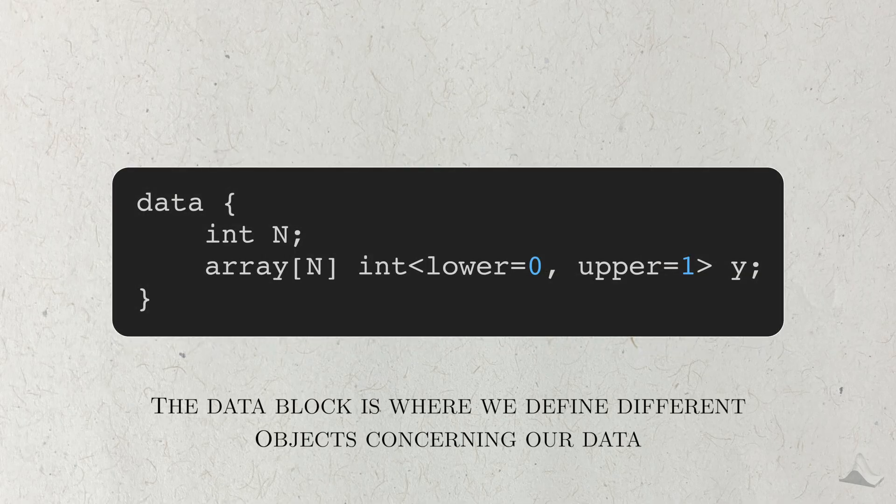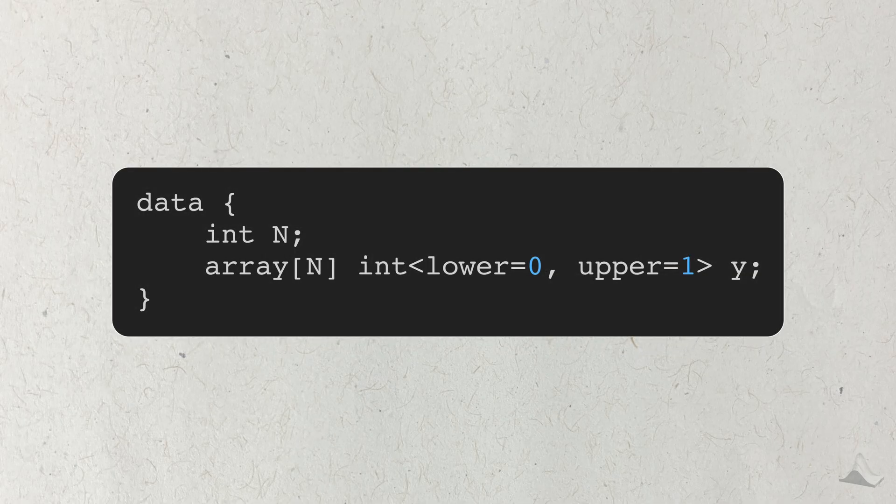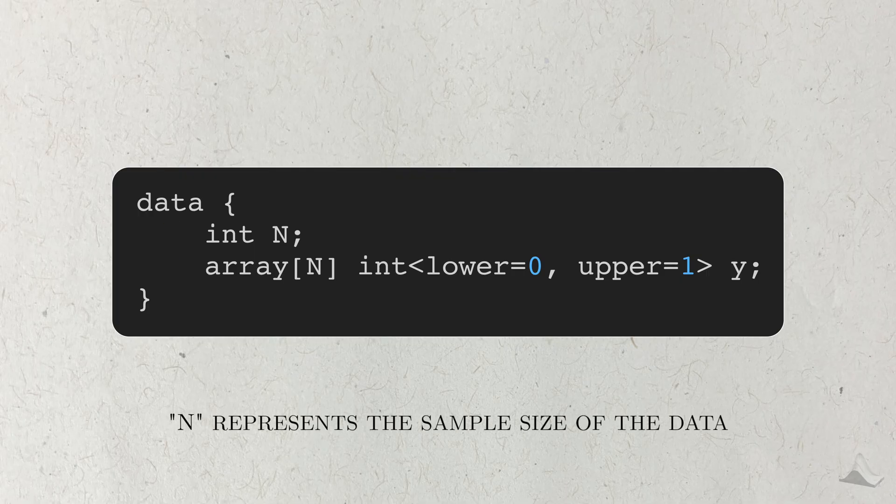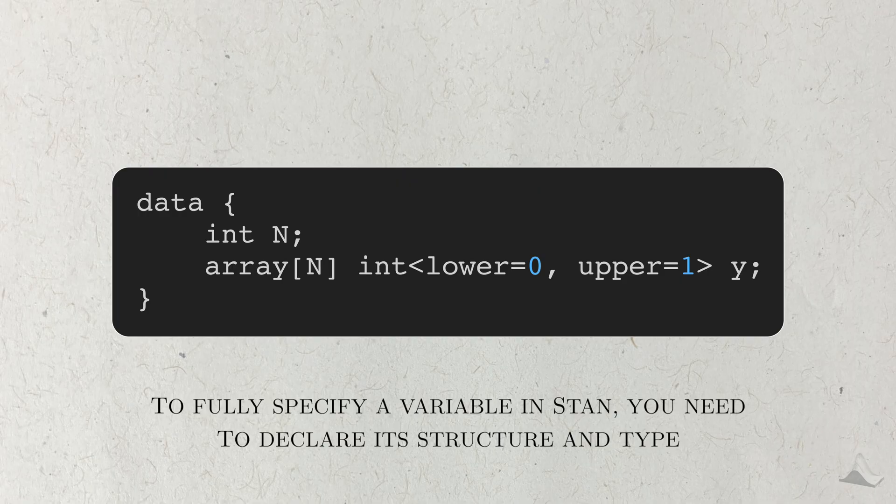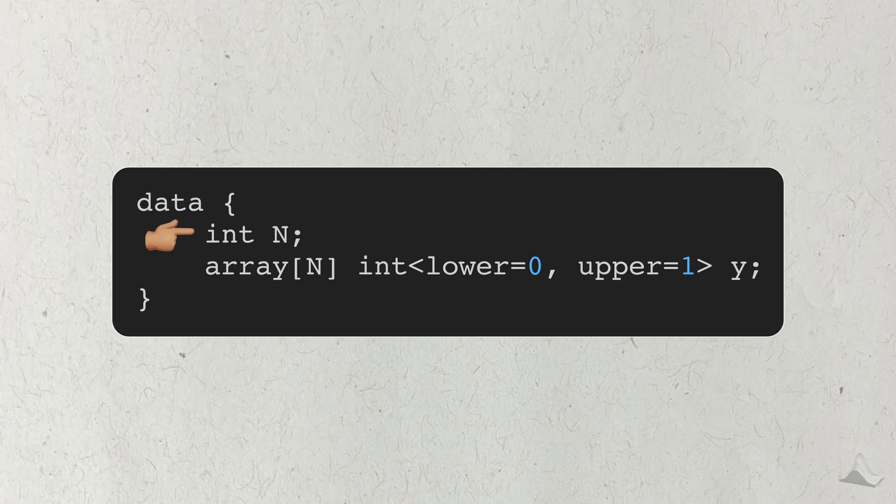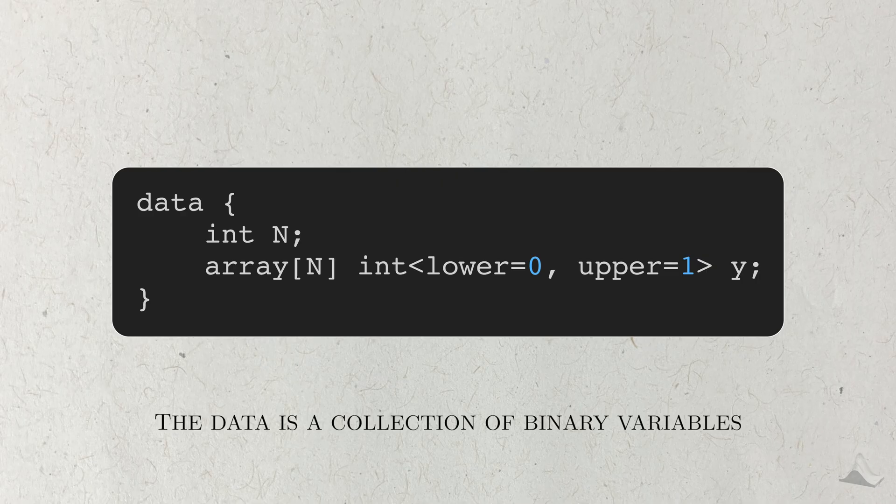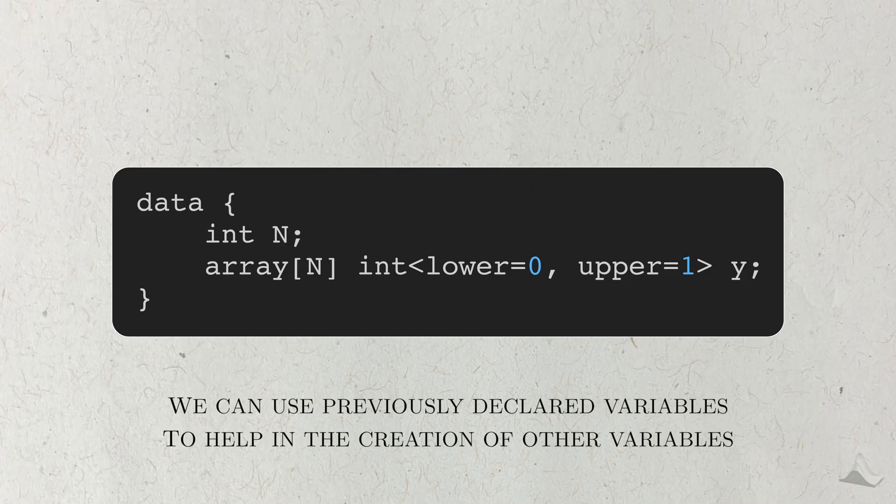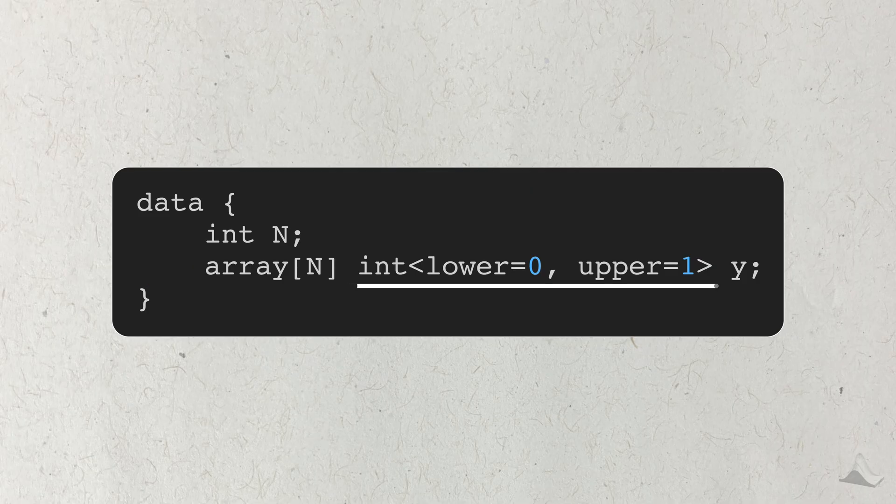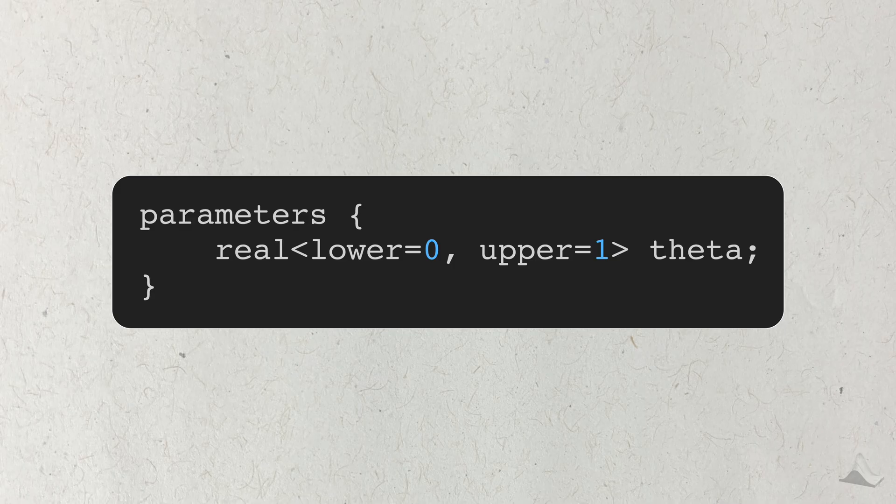First is the data block, where we describe the data that STAN will be using. I'm going to list two variables in this block, capital N and y. N will describe the sample size of the data. To fully specify the variable, we need to describe its structure and its type. In this case, N is just an integer, and then we finish that line with a semicolon. Next is the data, which I've named lowercase y. The data is binary, and it's a collection of values, so we can describe it as an array of integers of size N. Notice that we used the previous sample size to help set up the y vector. To better describe the data, we can also set up lower and upper bounds on the data in angled brackets. Next is the parameters block, where as you might expect, we describe the parameters that are used in the model. The only parameter here is theta, and it's a real number between 0 and 1. And I can do this similar to how I specified the data, substituting int for real.